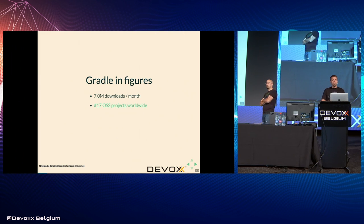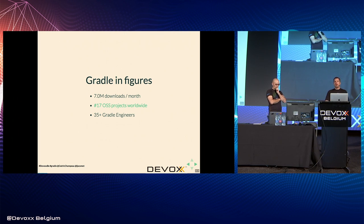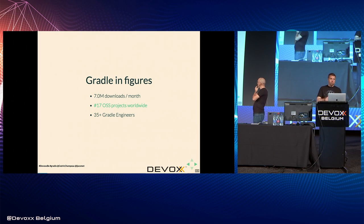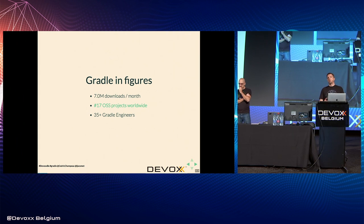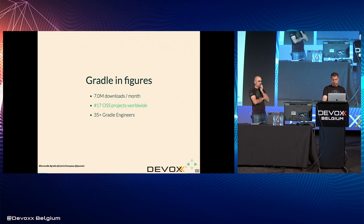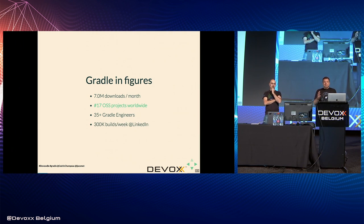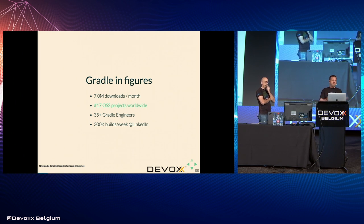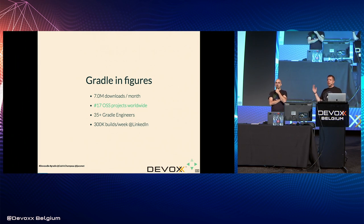A study a couple of years back named Gradle one of the 20 most important open source projects. We now have over 35 full-time engineers working on both the build tool and the enterprise offering. Performance is a very important aspect at Gradle. To give you an idea of scale: at LinkedIn we're talking about 300,000 builds a week, so whenever you shave a couple of seconds or minutes off builds, it scales tremendously.